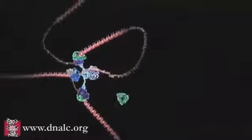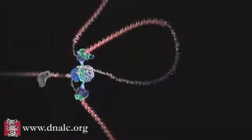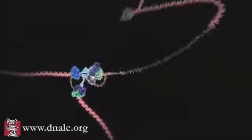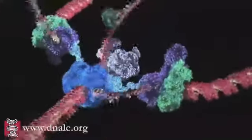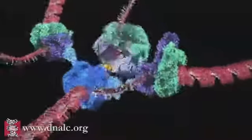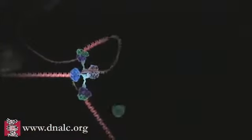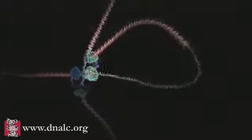Copying occurs at a localized region called the replication fork, which is a Y-shaped structure where new DNA strands are synthesized by a multi-enzyme complex. Here, the DNA to be copied enters the complex from the left. One new strand is leaving at the top of frame and the other new strand is leaving at the bottom.